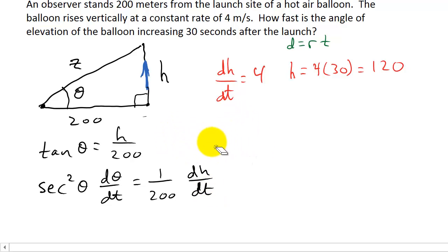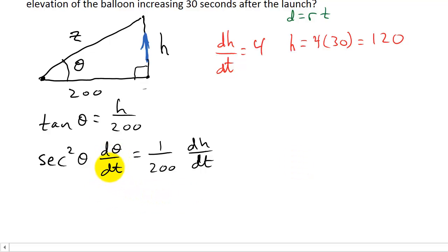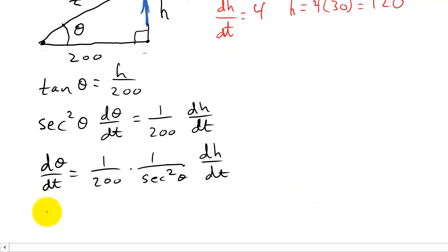All right, so now I'm looking for the change in the angle. So I'm looking for dθ/dt. So if I solve this for dθ/dt, I get dθ/dt is equal to 1 over 200 times 1 over secant squared theta times dh/dt. And so this is dθ/dt is equal to 1 over 200. And then 1 over secant squared is what? Cosine squared times dh/dt. All right, so now I've solved for dθ/dt.